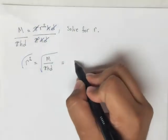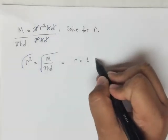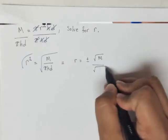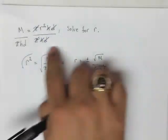So I would say r equals plus and minus the square root of m over the square root of πhd, which would look something like this also.